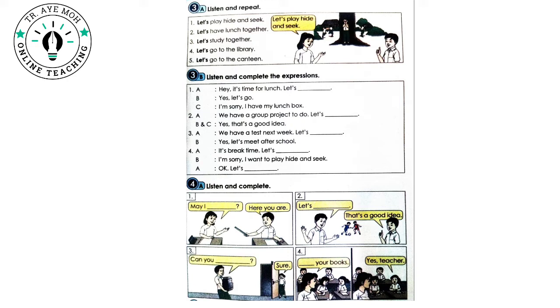Track 8. 4A. Listen and complete. 1. May I borrow your ruler? Here you are. 2. Let's play football. That's a good idea.